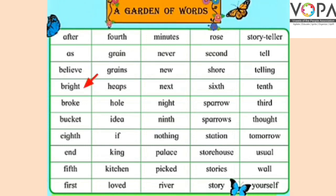'Bright' — b, r, i, g, h, t. Bright means चमकदार। 'Broke' — b, r, o, k, e. Broke के माना होते हैं टूट गया। 'Bucket' — b, u, c, k, e, t. Bucket means balty (بالٹی)۔